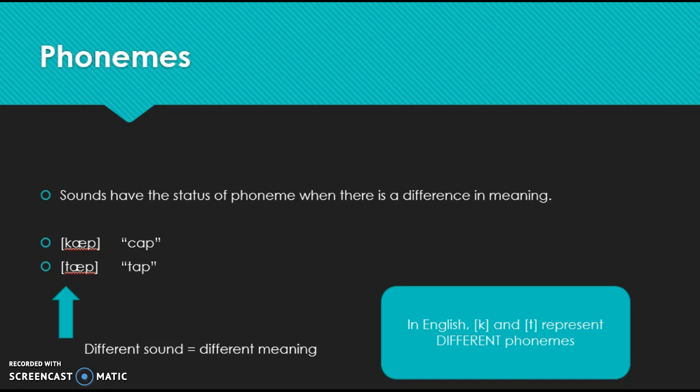In English, it's important to specify which language we're talking about because this is not cross-linguistic. There'll be differences in different languages. But in English, k and t represent different phonemes.